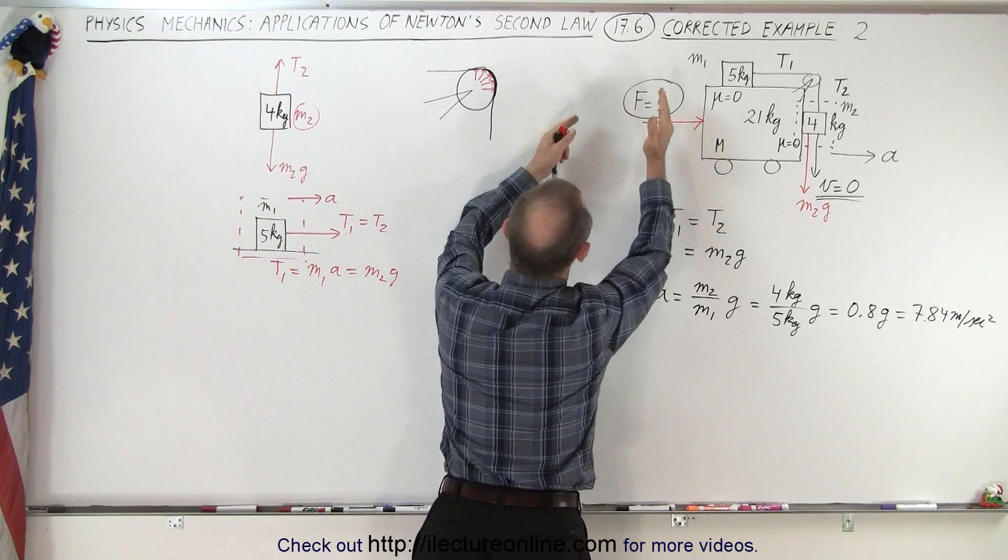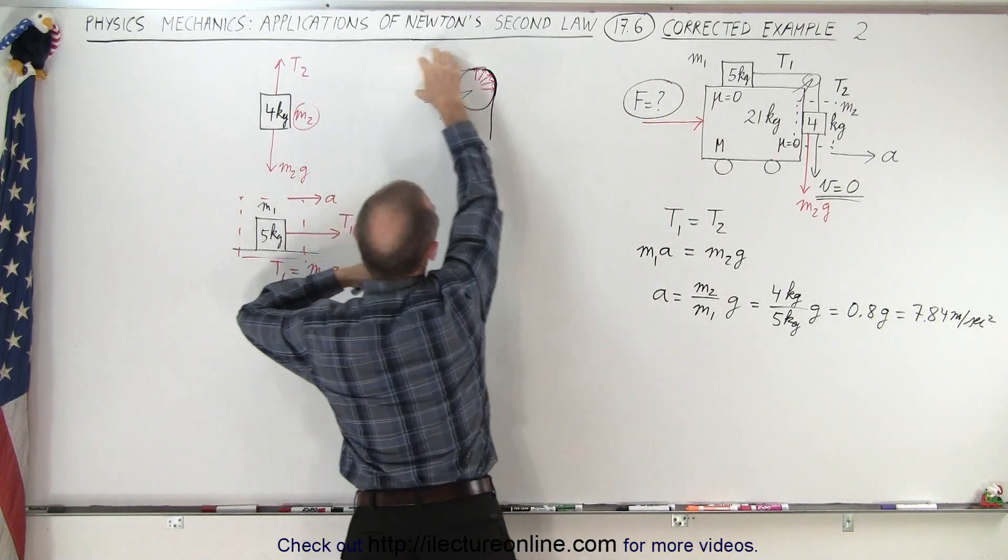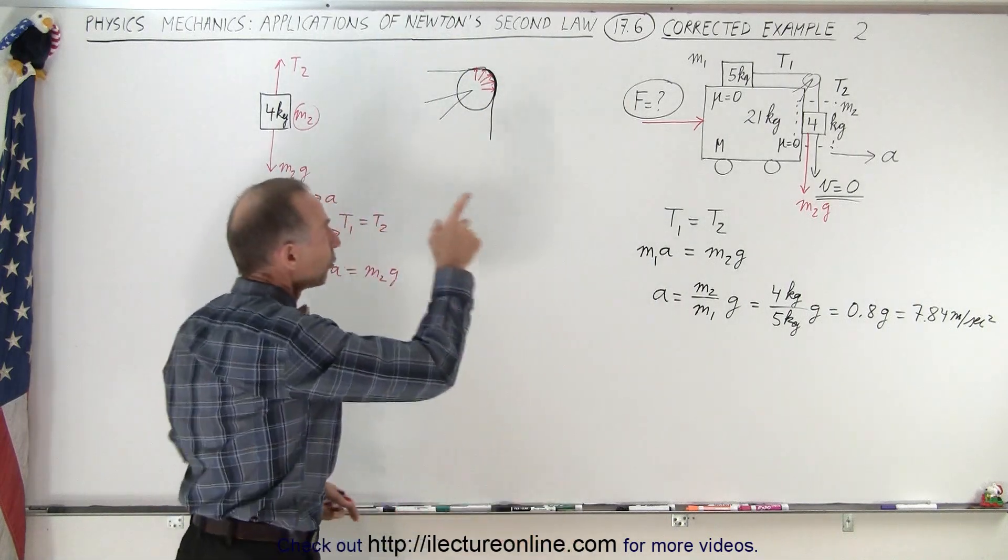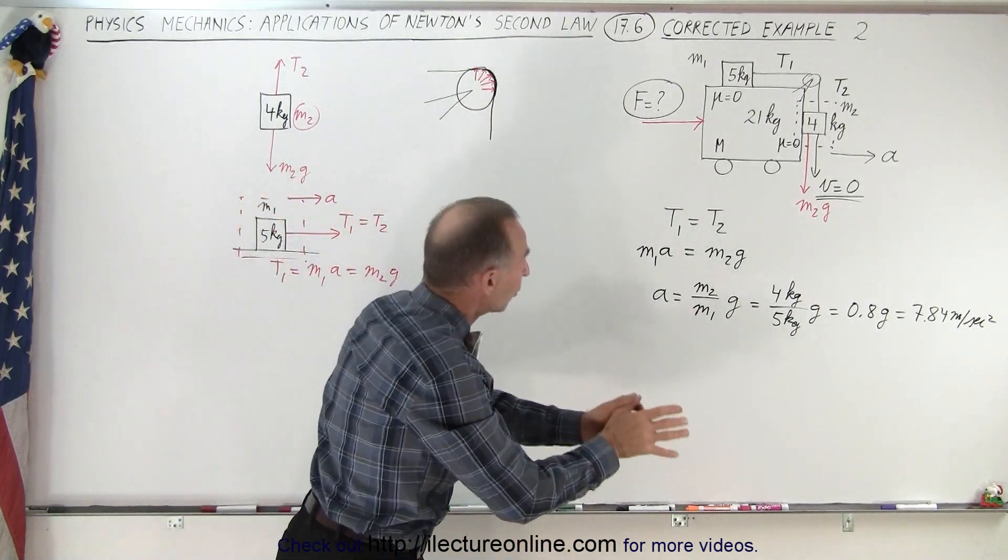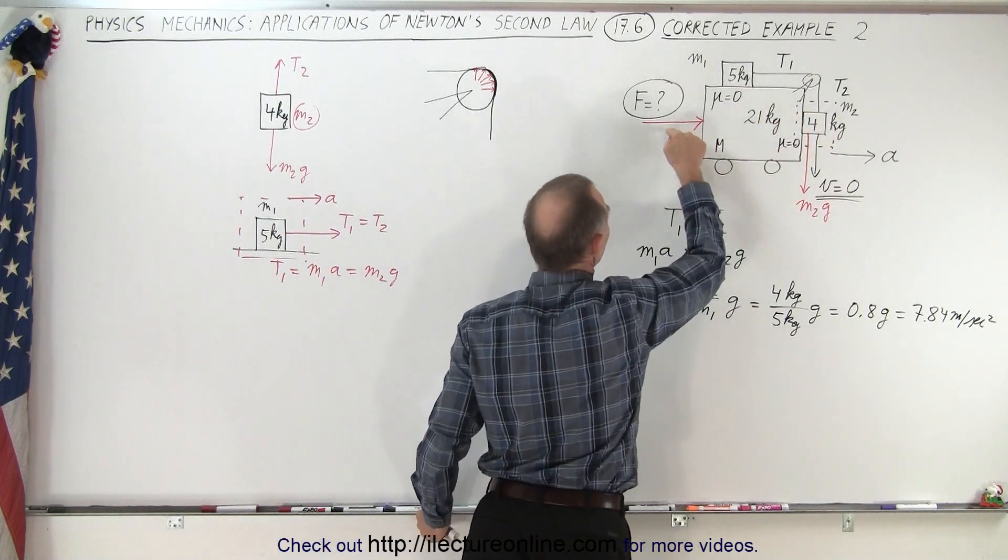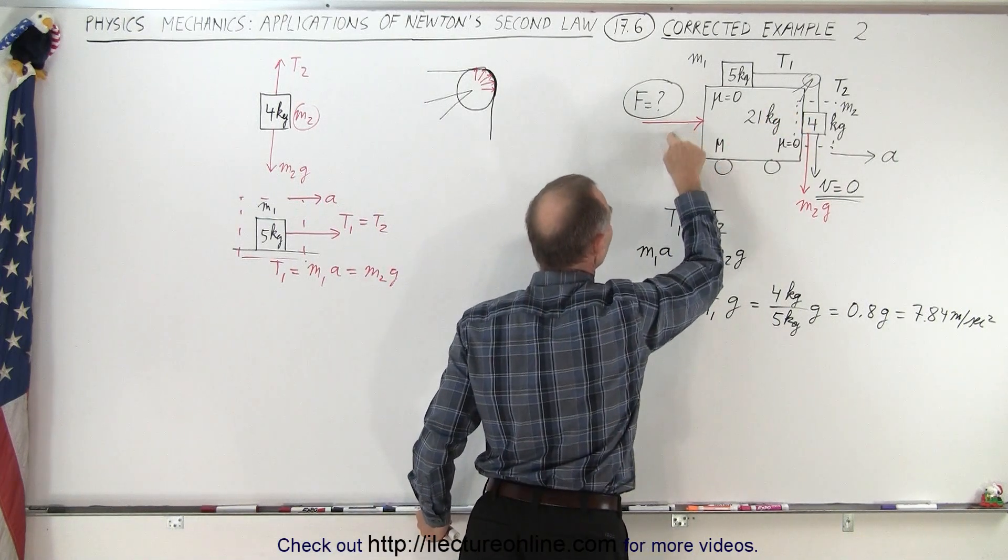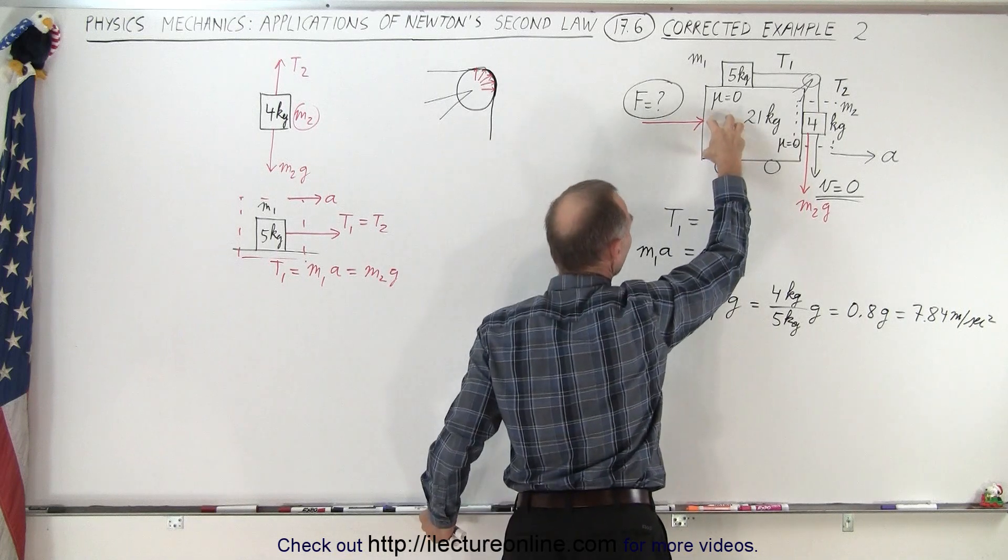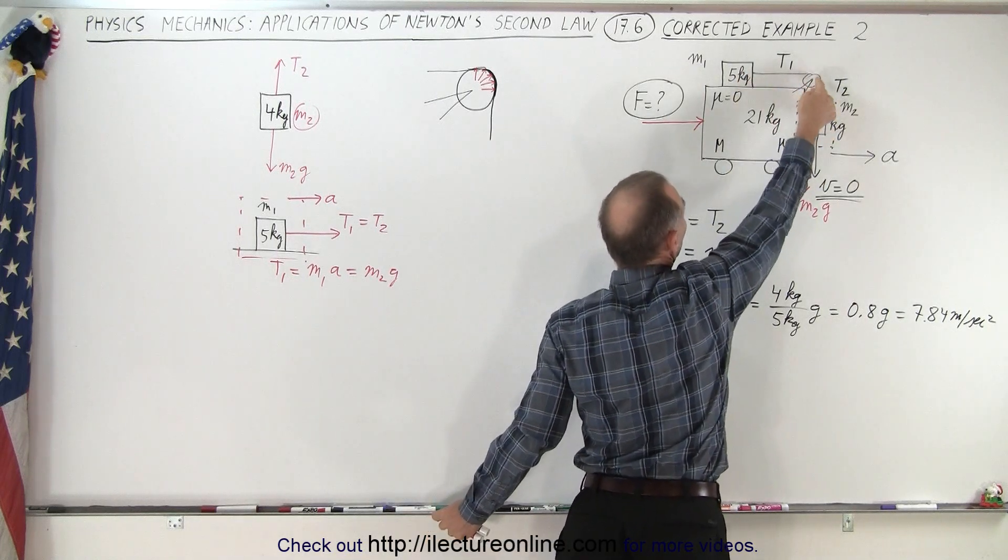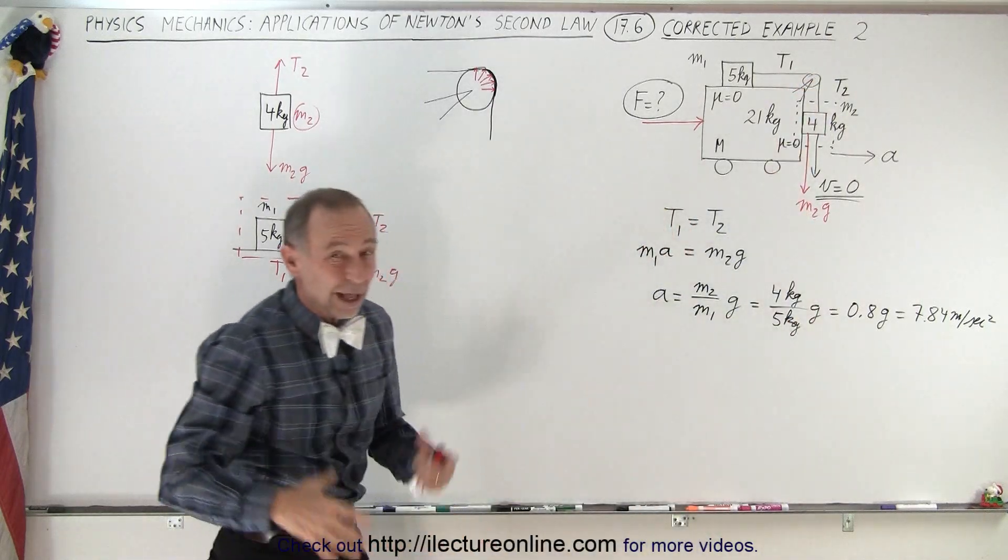This causes block m1 to be pulled along with it. So that's how that force is transferred to block m1 to get it to push to the right. And since that pulley is attached to the big block, and the big block is pushed with force F, this F accelerates the big block, this block which is leaning against it, and this block due to the forces on the pulley. So now everything seems to make sense.